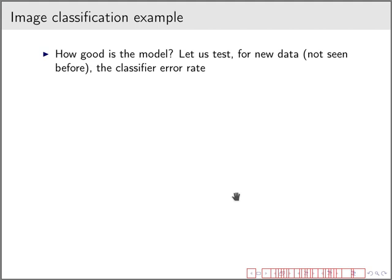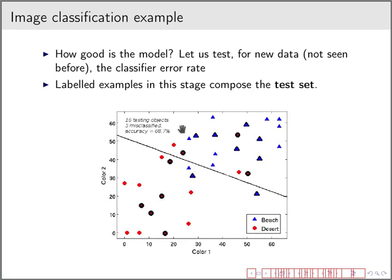However, how good really is this model? In order to really assess that, we use new data, data that was not seen before in training time. So this data should not be used to train or to learn the parameters of the classifier. This is what we call the classifier error rate for test. So we have to, usually in experiments, we have to separate a few instances in order to test whether the classifier is good or not. In this case, I'm using 16 testing objects.